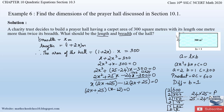Equating each bracket to zero: 2x + 25 = 0 gives 2x = -25, so x = -25/2. And x - 12 = 0 gives x = 12. These are the two roots of the quadratic equation.